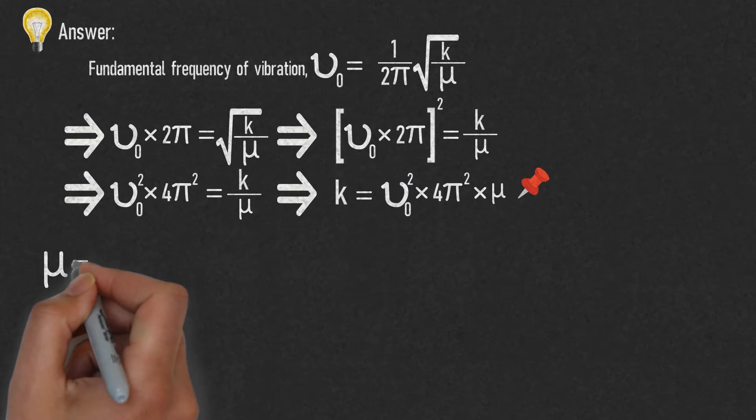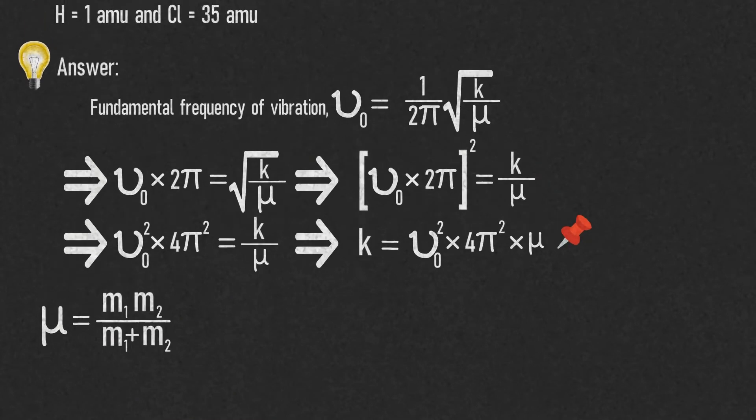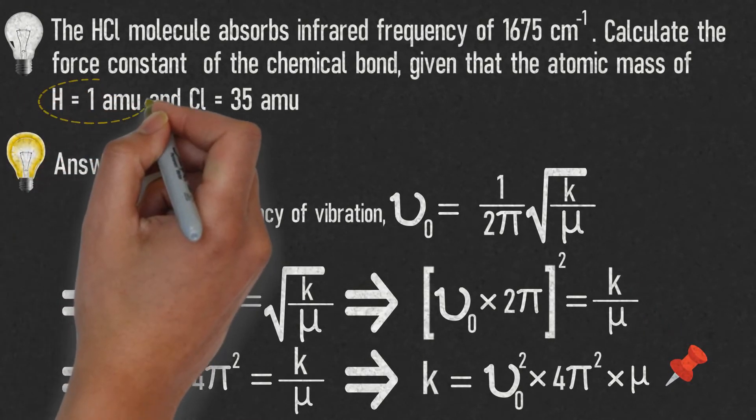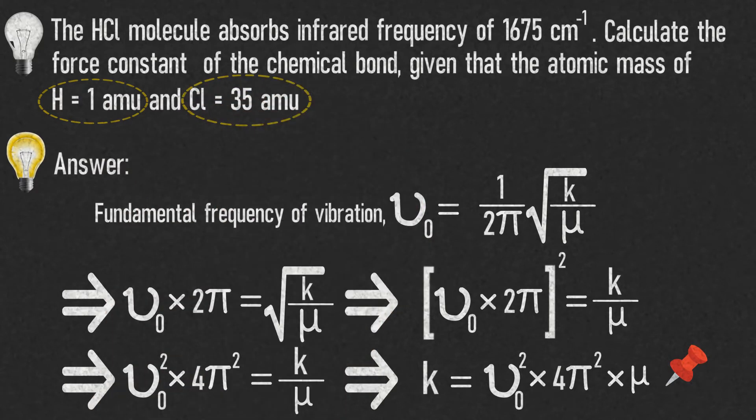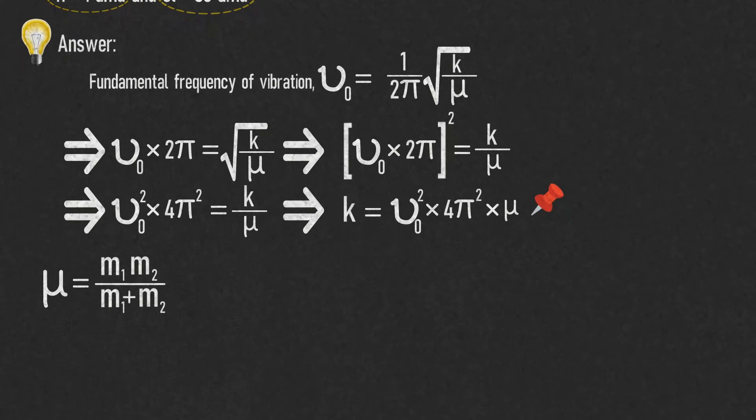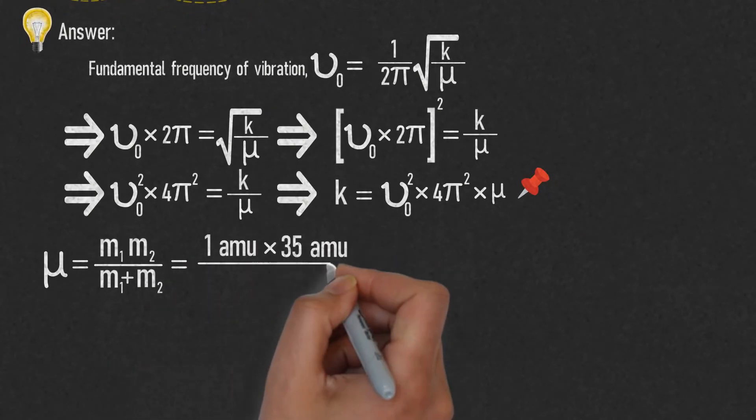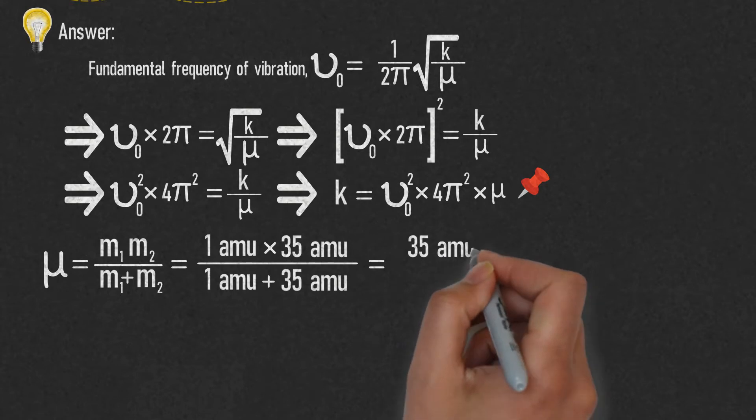Let's find out μ. μ = m₁m₂/(m₁ + m₂). From the question, we have m₁ = 1 amu and m₂ = 35 amu. So the equation becomes = (1 amu × 35 amu)/(1 amu + 35 amu) = 35 amu²/36 amu.